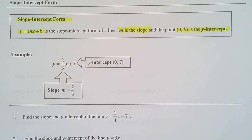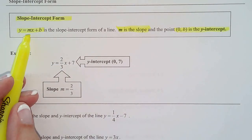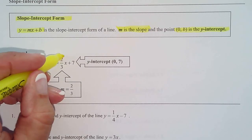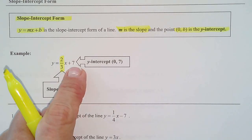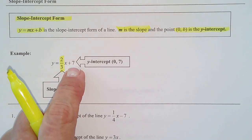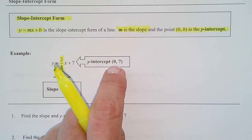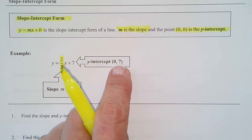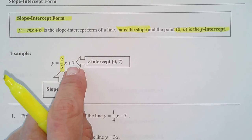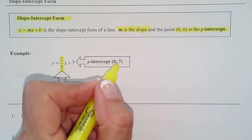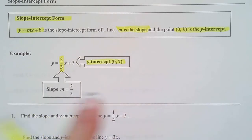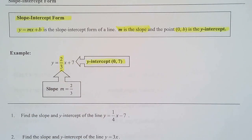So, looking at this example, m is always what's in front of the x. So, I look in front of the x, and I go, oh, there's my m. It's two-thirds. That means my slope is two-thirds. Oh, and look at that constant back there. That's my y-intercept. So, since a y-intercept always has x equals 0, it's 0, whatever that number is, which is 7.